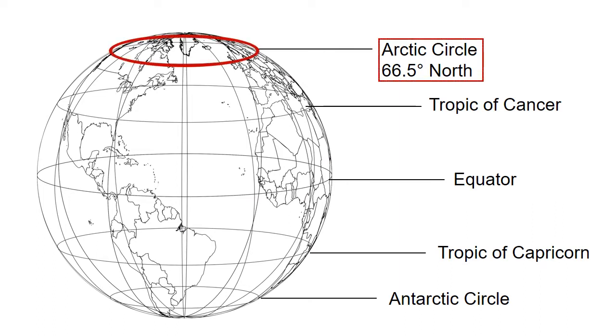The Arctic Circle is one of the five major circles of latitude. This is the parallel of latitude that runs 66.5 degrees north of the equator.